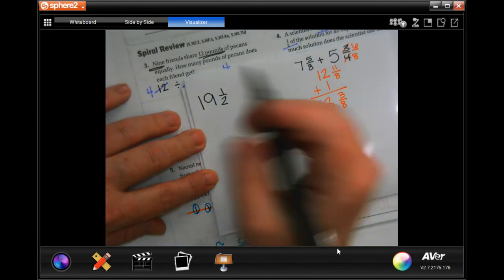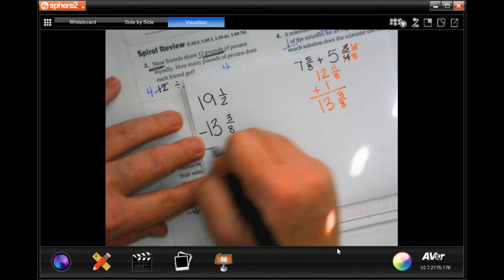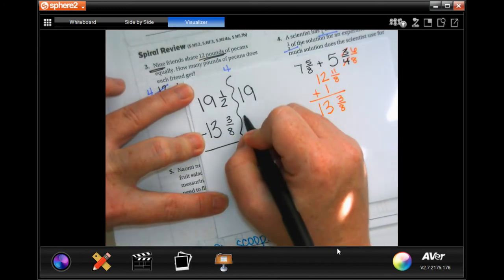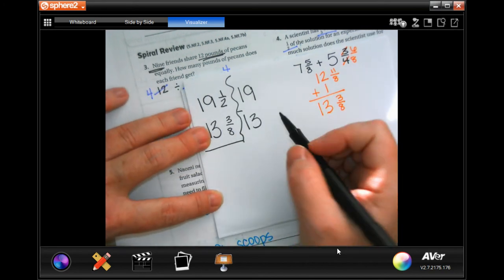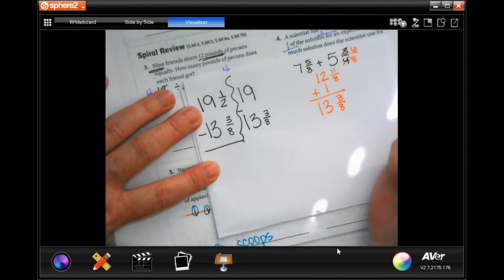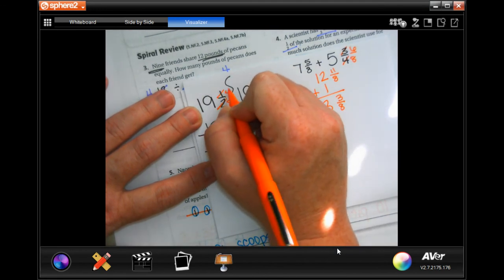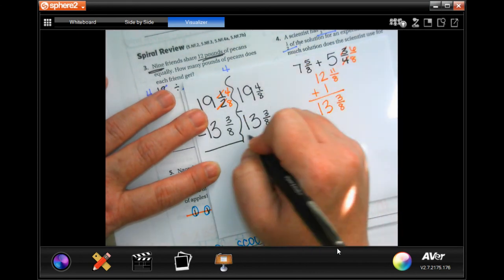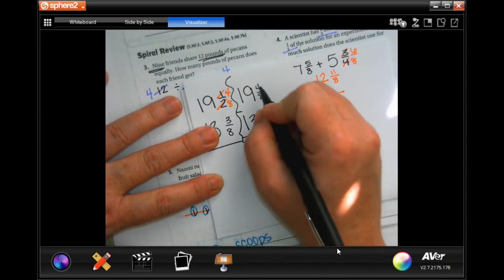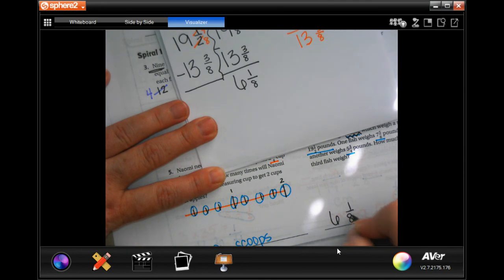So now I'm going to have 19 and a half minus that 13 and 3 eighths. Again, I need to get a common denominator. So between 2 and 8, my smallest number they're both going to is going to be 8. Well, this one's already an 8, so I'm going to keep it the way that it is. Now, 2, in order to get it to 8, I had to multiply it by 4. But when I multiply the top by 4, I get 4. So, I'm going to have 4 eighths. 4 can take away 3, so I'm good there. 19 minus 13 is 6. 4 minus 3 is 1, and my denominator stays the same. So now, 6 and 1 eighth pounds.